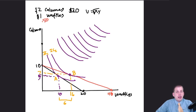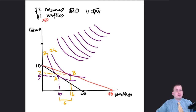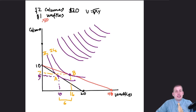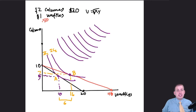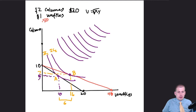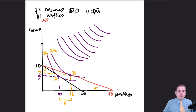We want to decompose that total effect. We want to figure out how much of those 6 additional waffles we're getting because we're richer and can spend more, and how much is because we're switching some calzones for waffles based on the trade-offs we're making. To do that, we take the new budget line that goes from 10 to 40 and bring it back to where it's tangent with the original indifference curve.